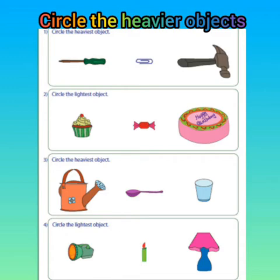Ice cream — which one is the most heavy among these three? The cake is the heaviest of the three, so you will circle the cake. Next, there is a garden pot, a spoon, and a glass. If we compare these three things, the garden pot is the most heavy, so we will circle the garden pot.